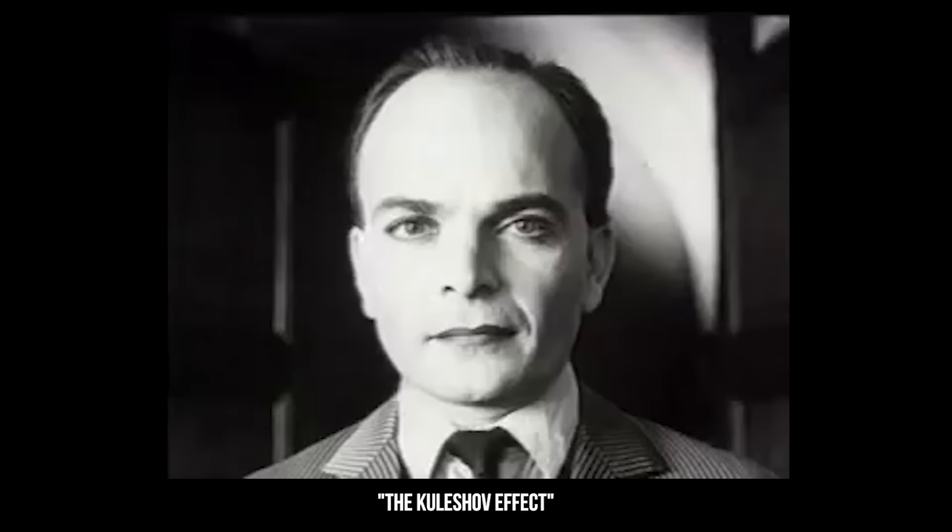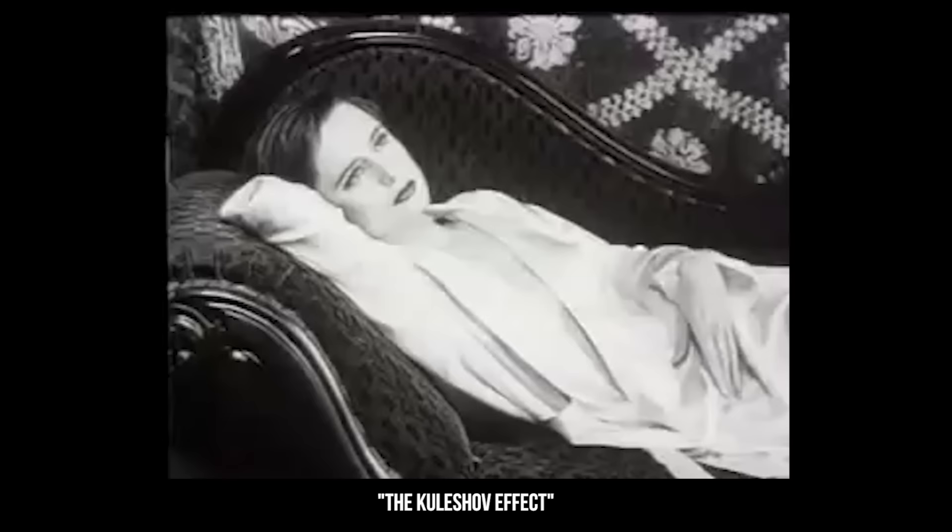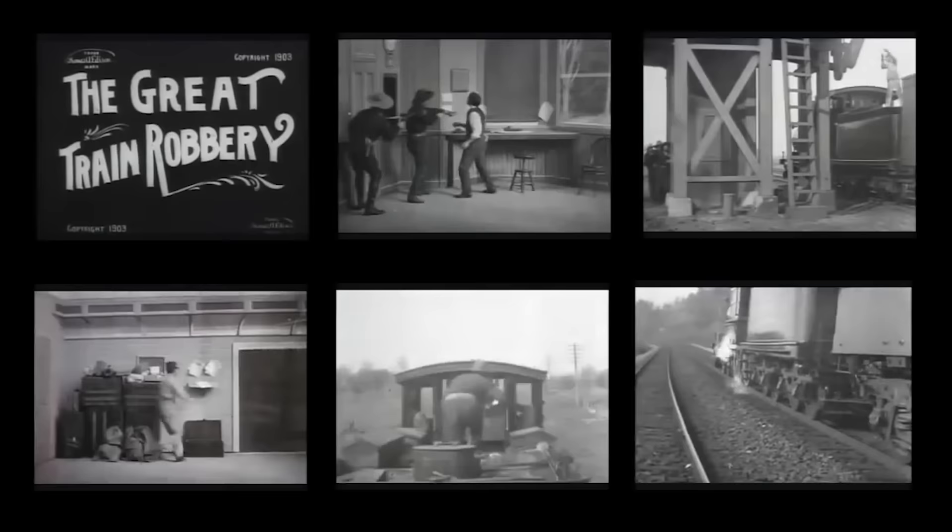And so, instead of recording an entire movie in strict chronological order, it was discovered that scenes could be filmed at different times and in different locations and then combined together later in the process that became known as editing. This was initially done by physically cutting apart the celluloid film stock and then splicing it together with another piece of film stock.